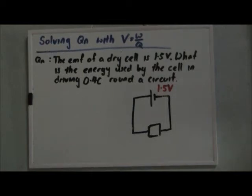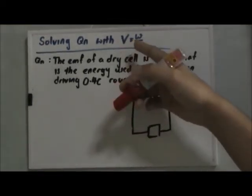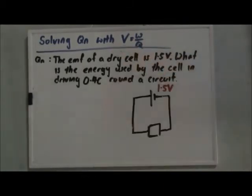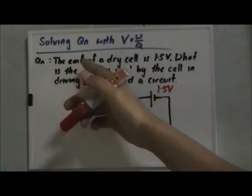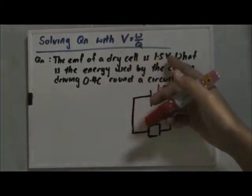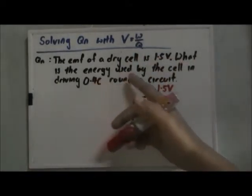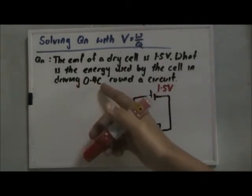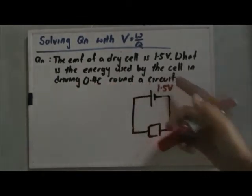Hi, I'm Mr. Omingyo. I'm going to use the formula V equals work done over charge to solve a question. We have the EMF of a dry cell, which is a battery, at 1.5V. What is the energy used by the cell in driving 0.4C around a circuit?